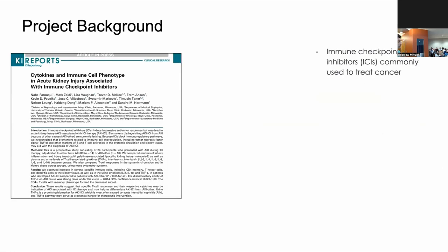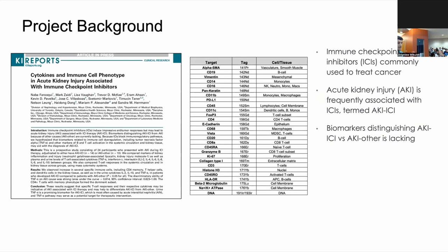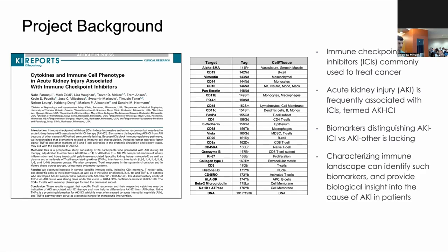In collaboration with nephrologists at the Mayo Clinic, our aim was to use IMC to characterize the heterogeneity and identify biomarkers of kidney injury caused by immune checkpoint inhibitors. Immune checkpoint inhibitors are used in a wide variety of cancer therapies, but one major side effect is acute kidney injury, hypothesized to be caused by elevated systemic circulation of immune cells. Prior studies identified a panel of biomarkers indicative of AKI caused by ICI, as well as other causes, and characterizing the immune landscape can help discriminate between them.